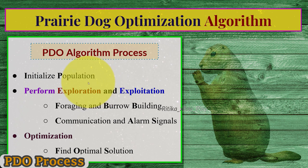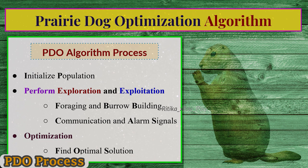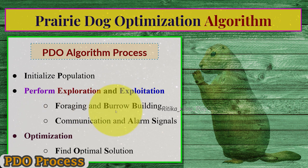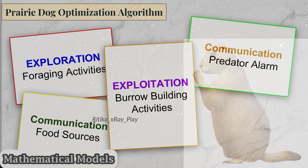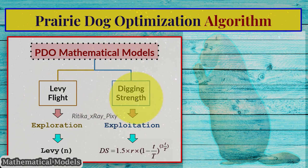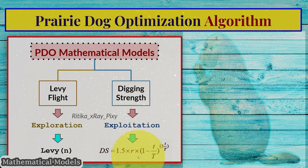The Prairie Dog Optimization Algorithm process begins with population initialization. As in all metaheuristic algorithms, we use a population of individuals called search agents. Here we have a population of prairie dogs in a colony, and they go through different exploration and exploitation phases to find the optimal solution. Different prairie dog activities — foraging, burrow construction, communication, and alarm signals — are simulated to find the optimal solution.